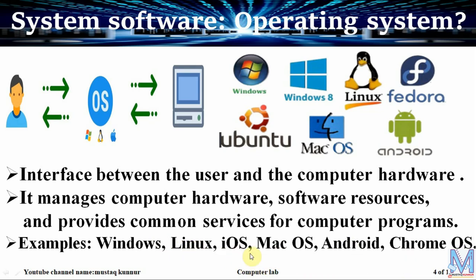A few examples of operating systems are Windows, Linux, iOS, macOS, Android, and Chrome OS. Windows is the most commonly used operating system in PCs, desktops, and laptops. Linux is an open source operating system. iOS and macOS are made by Apple — iOS is used in mobiles, whereas macOS is used in computers.